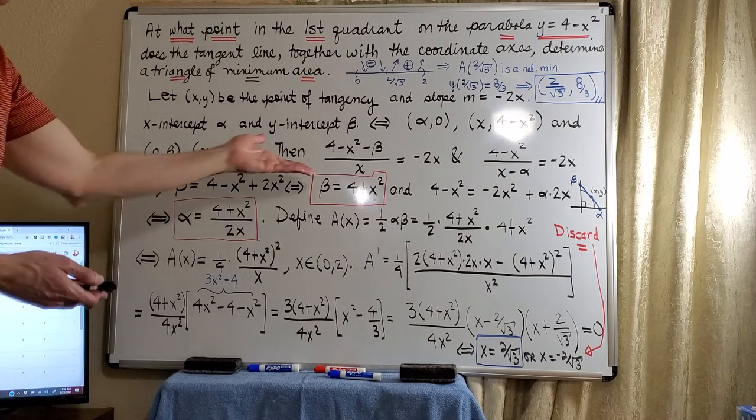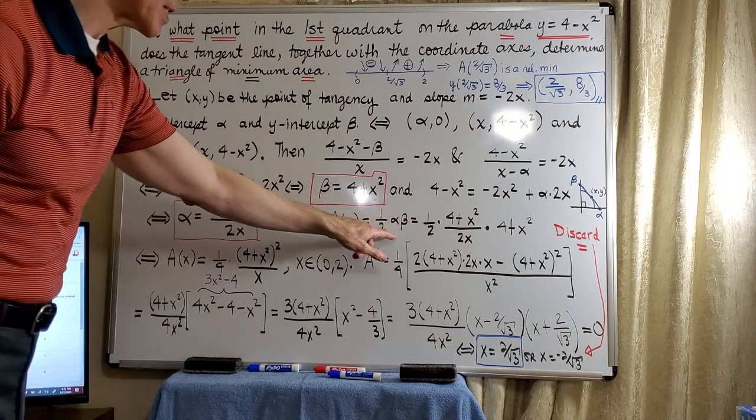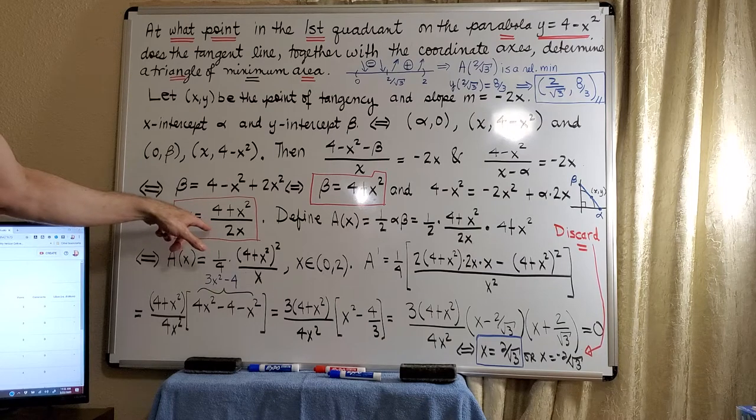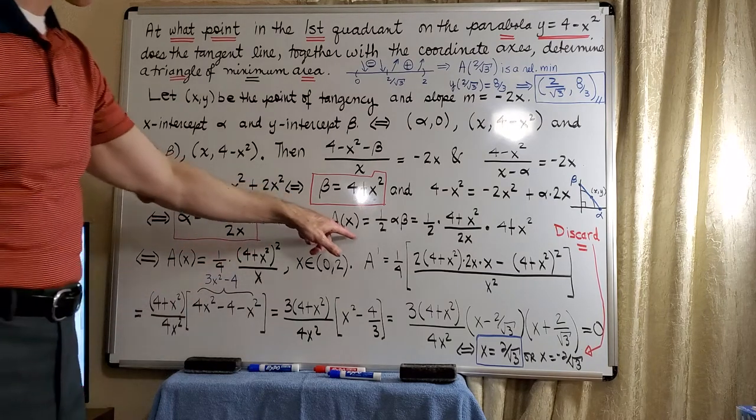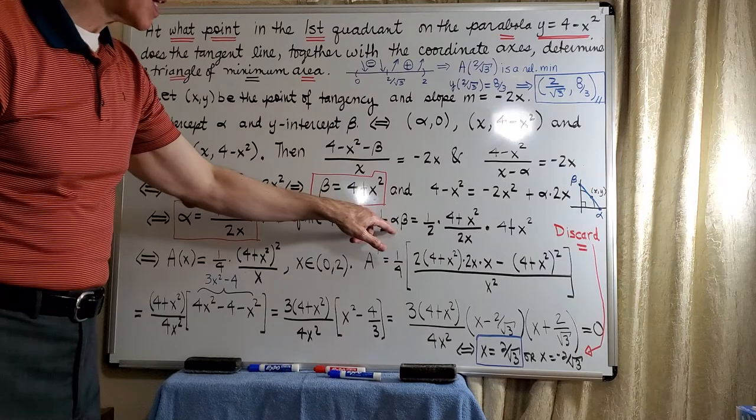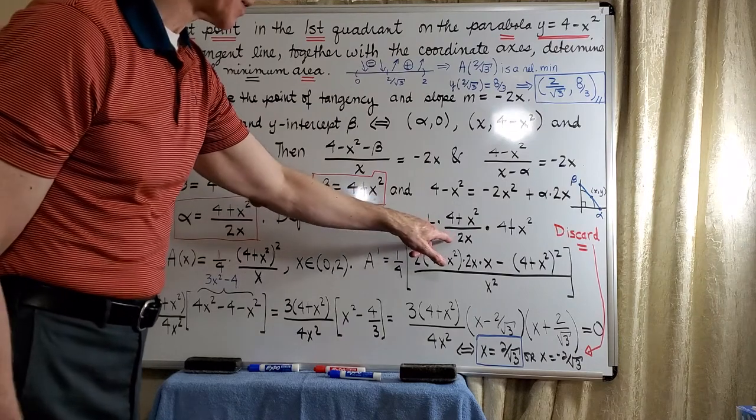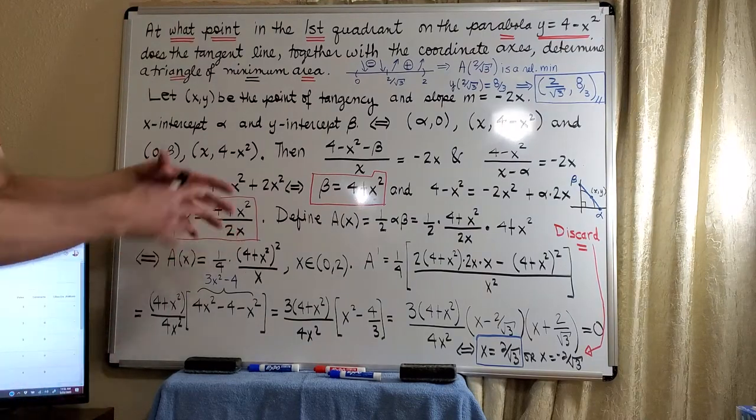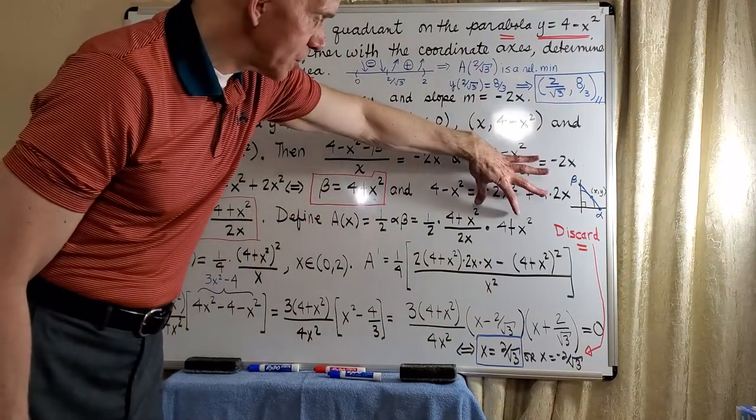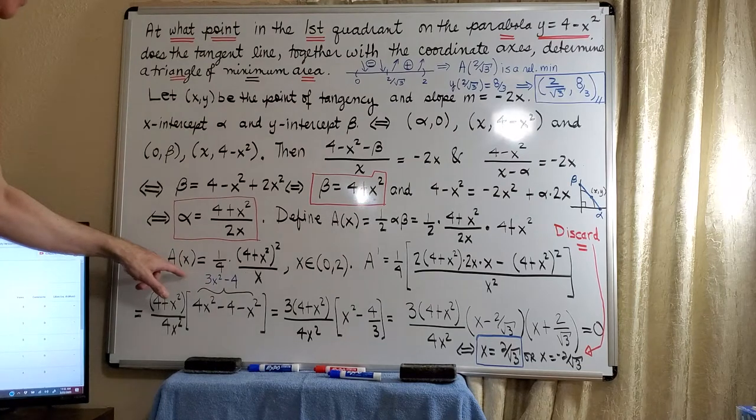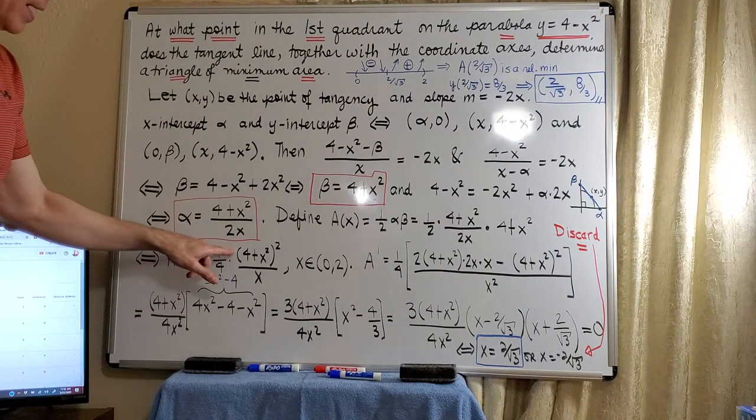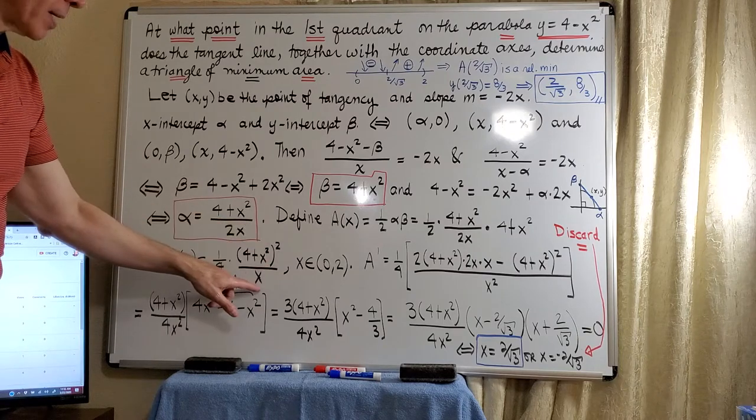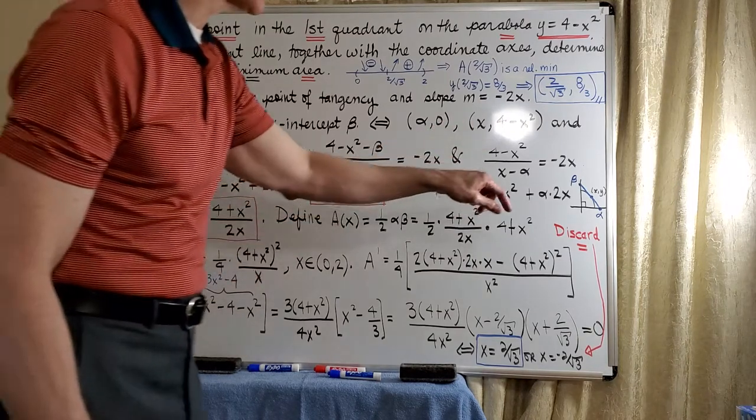Now we have all of the ingredients that we need for this formula here. And you can see that there will be an issue with 0. I'll say a little bit more about that as we work through this problem. Now, when we substitute for alpha and beta, we simply write alpha here and beta here. And then we just do a little bit of algebra. These two terms are like, so the area function will be ¼ times the quantity (4 + x²)² divided by x.